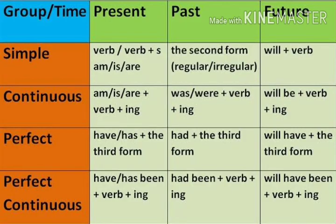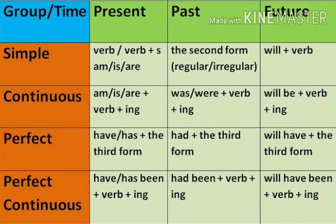You can see the table of present, past, and future tenses. As we have learnt the simple and continuous forms: in simple present, we use verb or verb plus 's', or am/is/are. In simple past, we use the second form of the verb — it can be regular, by adding 'ed', or irregular. Simple future: we use 'will' plus verb. In present continuous: am/is/are plus verb-ing. Past continuous: was/were plus verb-ing. There are different types of tenses, and we will learn all of them in higher classes.